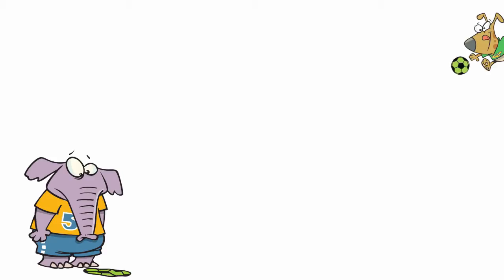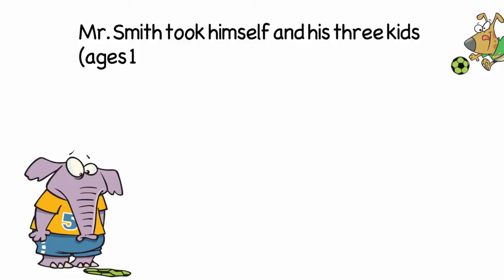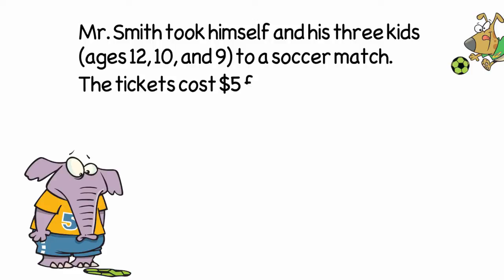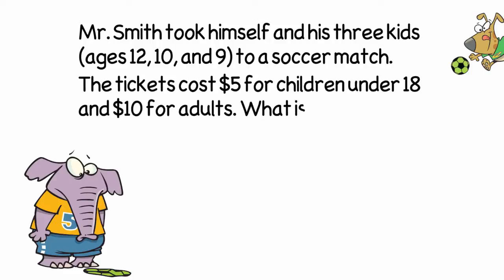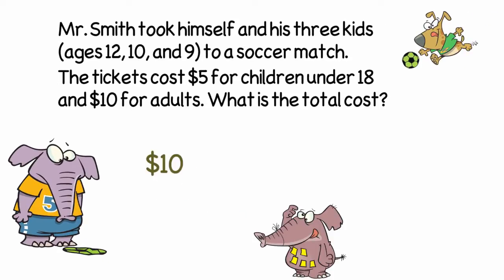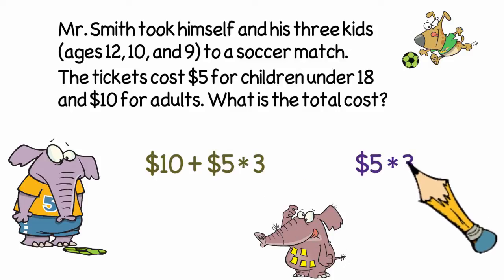Let's start by looking at an example. Mr. Smith took himself and his three kids, ages 12, 10, and 9, to a soccer match. The tickets cost $5 for children who are under 18 and $10 for adults. So let's write out that problem. We could write it out as $10 for Mr. Smith plus $5 times 3 for the children. Or we could have written $5 times 3 for the children plus $10 for Mr. Smith.